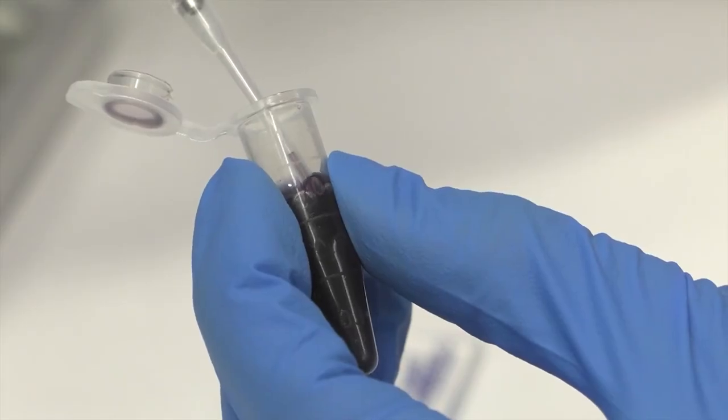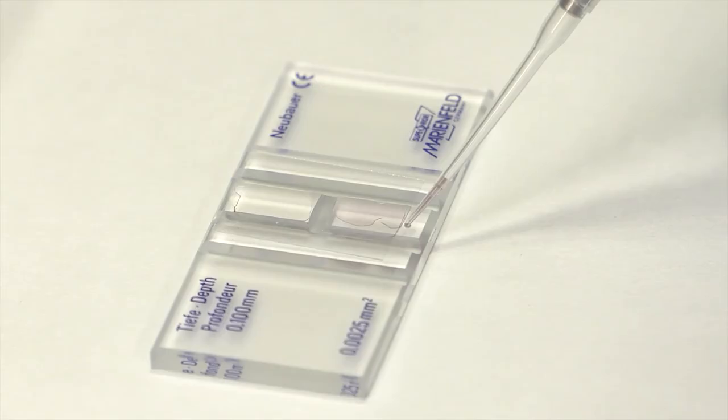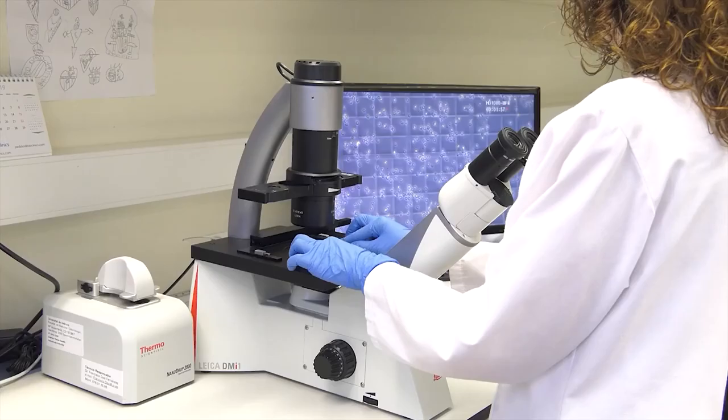Once the sample has been deposited in the central area of the chamber, the leukocyte count shall be carried out in the 4 lateral squares. For a good cell count, the 4 squares shall be counted in their totality following the same criteria as for the erythrocyte count and their mean shall be calculated.